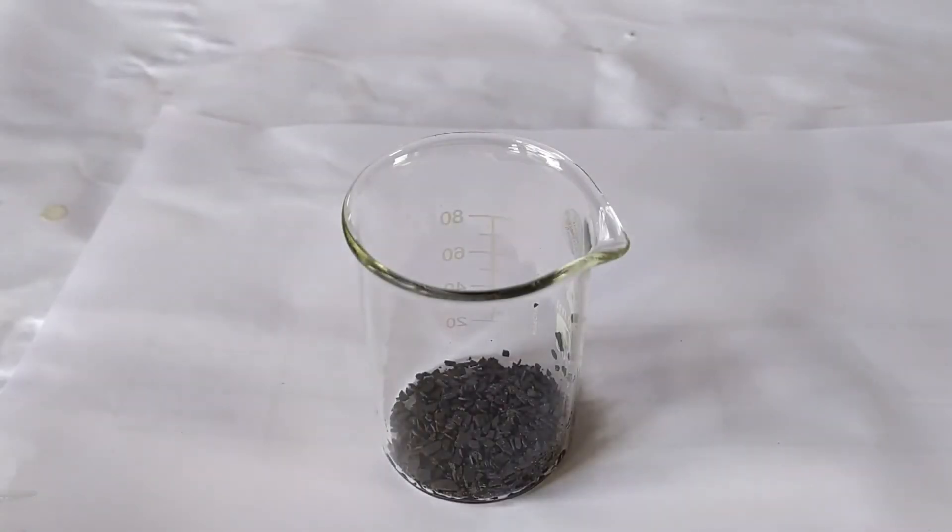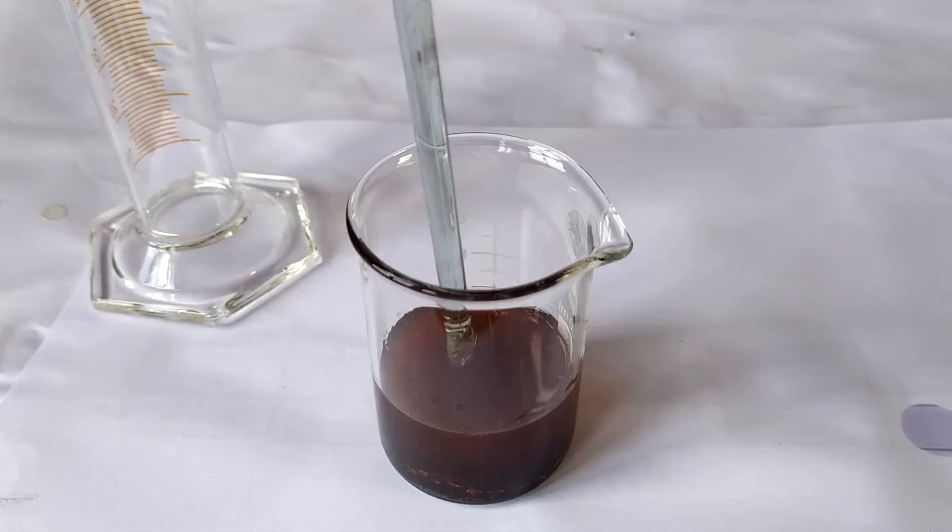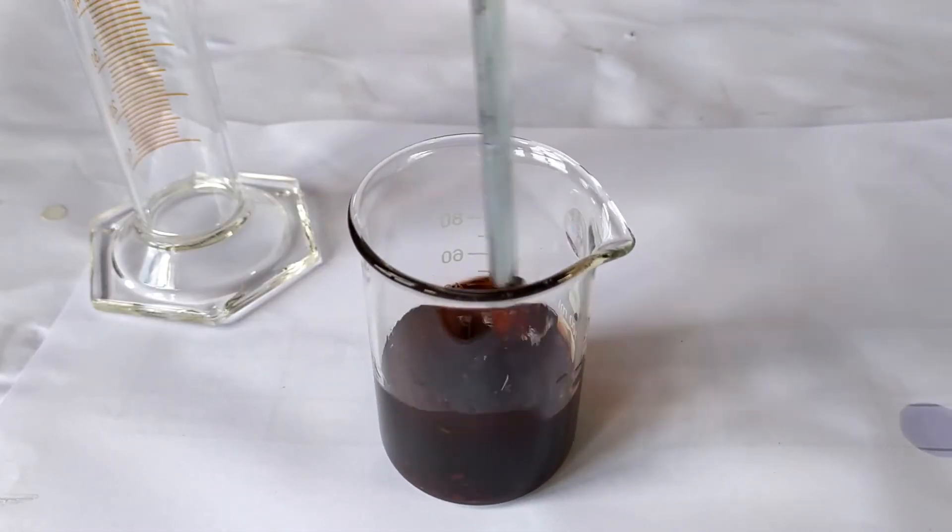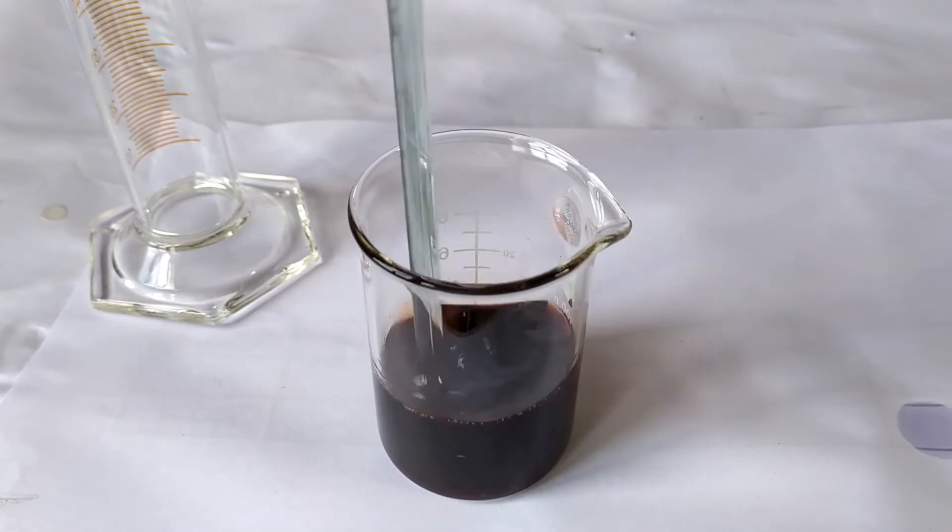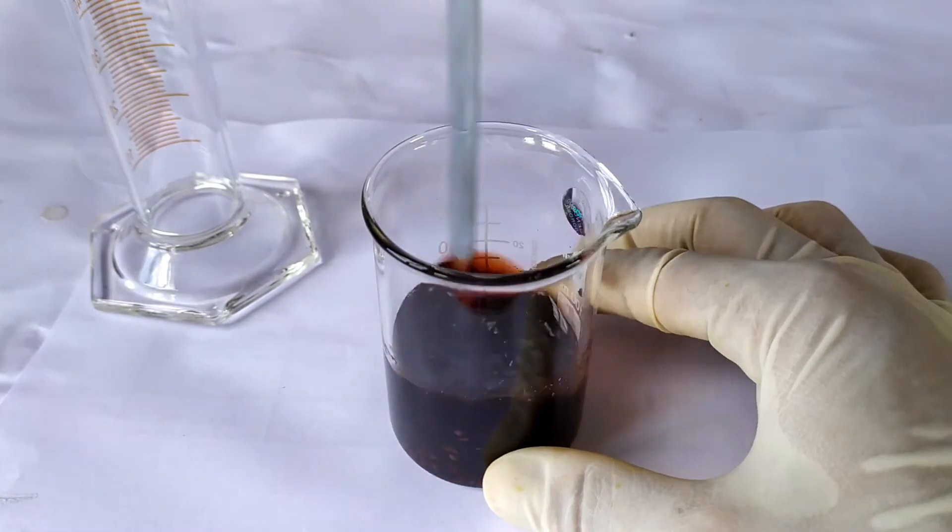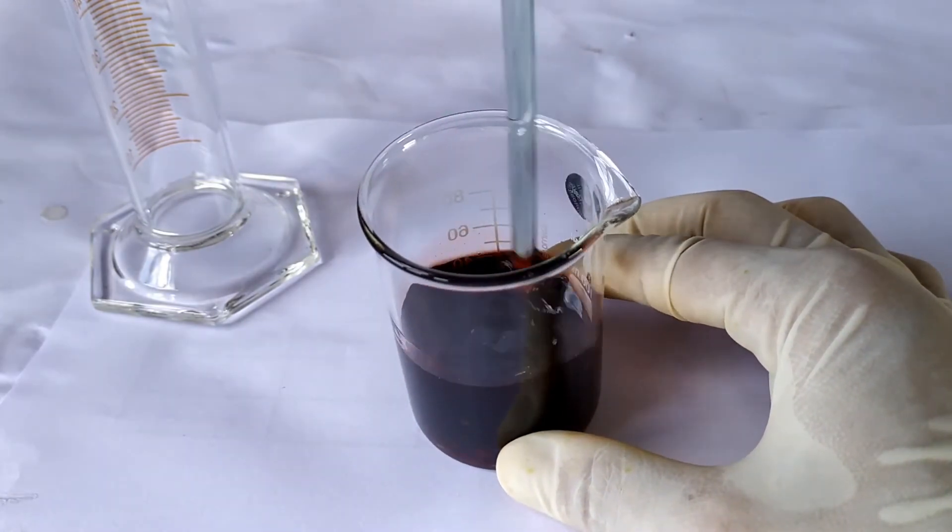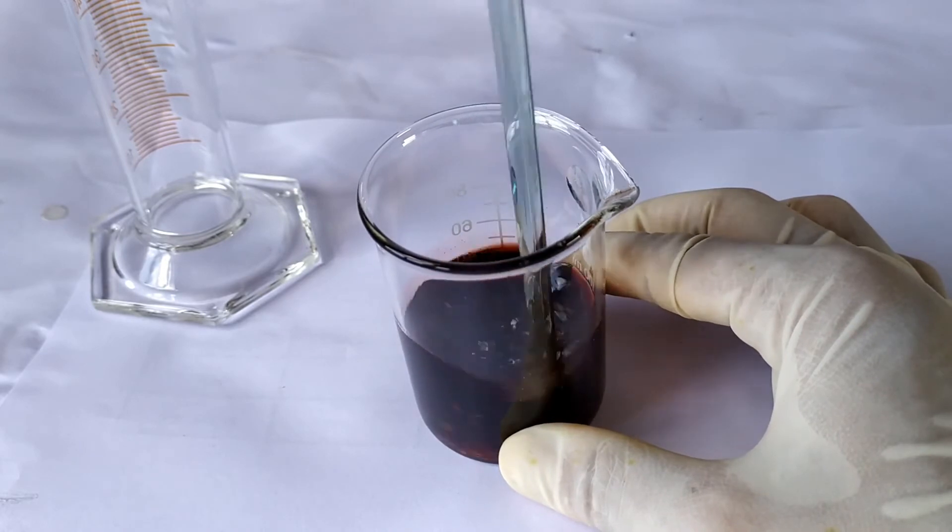Now add about 30 to 40 ml of the solvent to the beaker and stir to completely dissolve the naphthol. The solvent may be 95% ethanol or 100% ethanol or chloroform. In case you are using chloroform as a solvent, make sure to perform the reagent preparation in a well ventilated area or under a fume cupboard. I'll be using 95% ethanol in this video.